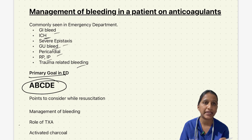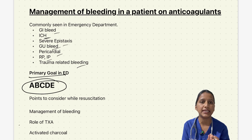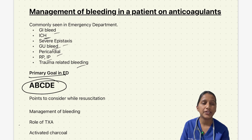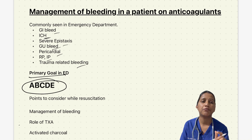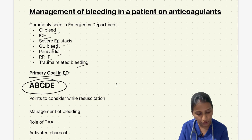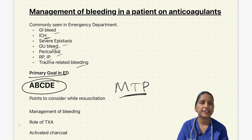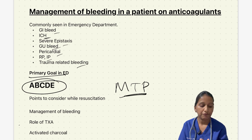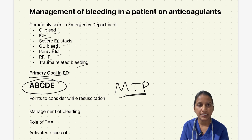A few key points while stabilizing circulation: two large IV bore cannulas must be placed. Isotonic crystalloids must be considered in case of hemodynamic instability. Blood and blood products must be administered according to the massive transfusion protocol. In case of trauma without intracranial hemorrhage, permissive hypotension with restricted volume therapy can be targeted, maintaining a systolic blood pressure up to 90 mmHg.